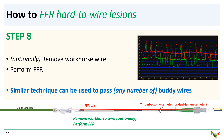Finally, step eight: perform FFR with your adenosine infusion. You can optionally remove the workhorse wire first if you are concerned about pseudo lesions caused by multiple wires. And that's it. This technique can be generalized to pass additional wires next to a workhorse wire that is already in place, so it can be used to pass any number of buddy wires in tough vessels.